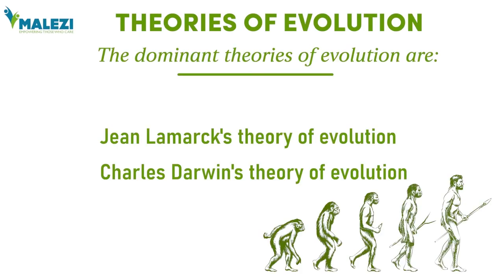Out of these theories, we'll be considering two major ones: the theory proposed by Jean Lamarck and the theory proposed by Charles Darwin. Starting with the first — Lamarck's theory of evolution. In order to explain the theory of evolution, Lamarck made use of two major ideas: the first is the use and disuse of body parts, and the second is the inheritance of acquired traits.